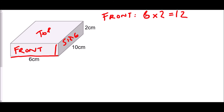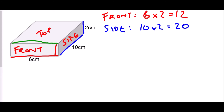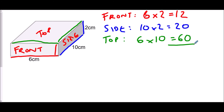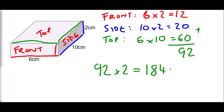The side is 10 cm by 2 cm, so 10 × 2 = 20 cm². The top is 6 cm by 10 cm, so 6 × 10 = 60 cm². Adding the three visible faces: 12 + 20 + 60 = 92 cm². Multiplying by 2 for the hidden opposite faces: 92 × 2 = 184 cm².